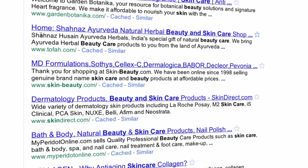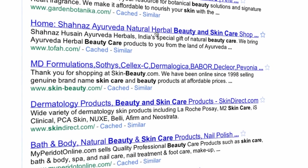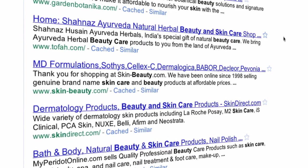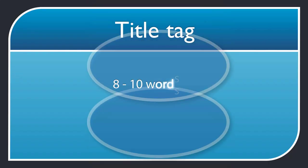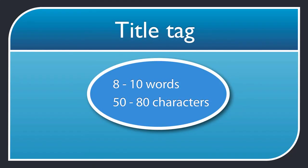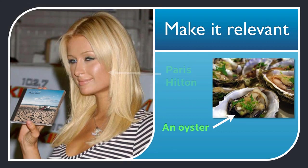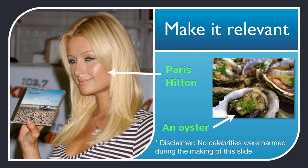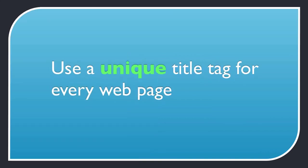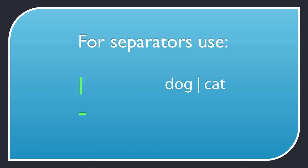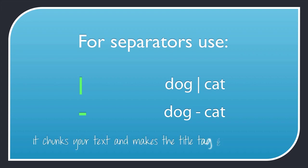If your titles are longer than 8 to 10 words, then that scanning becomes more difficult and may be overlooked by the searchers. So as a rule of thumb, aim for 8 to 10 words and 50 to 80 characters. Make sure your title tag is relevant to the content of your page — if the content is about oysters, don't have a title tag that mentions Paris Hilton. Use a unique title for every webpage, or your pages may be seen as duplicate content and Google may not list you in its index. For punctuation, I recommend you use the pipe symbol or dash, and don't bother with anything else.